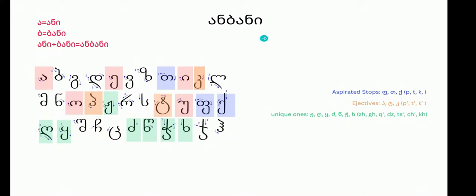I will start from the fact that the Georgian alphabet is called Ani-Bani, because A is called Ani and B is called Bani. We have five vowels shown with pink color: A, E, I, O, and U. We have aspirated letters like P, T, and K.